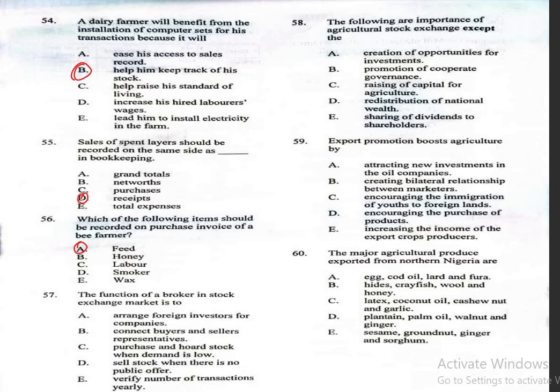Question 57: The function of a broker in stock exchange market is to A, arrange foreign investors for companies; B, connect buyers and sellers representatives; C, purchase and hold stock when demand is low; D, sell stock when there is no public offer; E, verify number of transactions yearly. The correct answer for question 57 is B, connect buyers and sellers representatives.